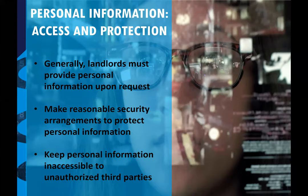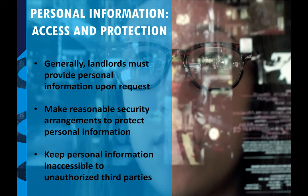Access and protection is a huge concern. Think of the LifeLabs breach, Uber's breach — there are all kinds of privacy breaches. The best thing to do is to collect as little as possible and to keep it for as little time as you need it, because then you're less susceptible to a breach. Personal information is a liability. Landlords must generally provide personal information upon request — that's another reason not to keep too much. You need to make reasonable security arrangements to protect personal information: using encrypted email, locking up the filing cabinet. If you're engaging in video surveillance, you would need to have that on an encrypted connection, on a machine that's secure that other people can't be snooping at the footage. Keep personal information inaccessible to unauthorized third parties.